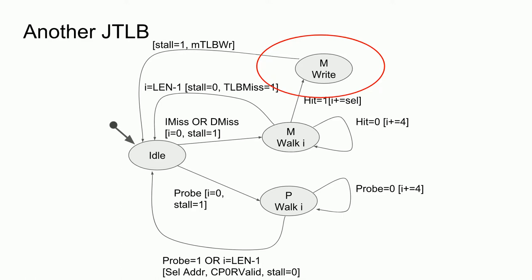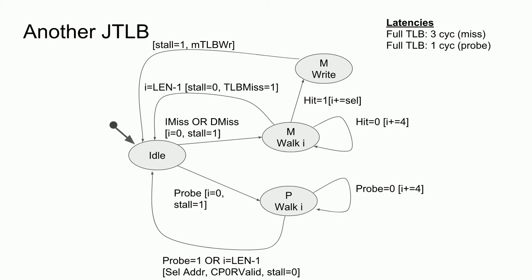Regarding operation latencies: with a full JTLB as specified by the MIPS architecture, a micro-TLB miss incurs only a three-cycle penalty — one cycle for the check, one to find the new entry, and one to write it. Probe instructions only require one cycle. For the BRAM TLB, a miss or probe results in an (n/4 + 1) or (n/4 + 2) cycle penalty respectively, where n is the number of TLB entries. A miss on a 32-entry TLB results in a 10-cycle penalty, and on a 48-entry TLB a 14-cycle penalty. Since the N64 rarely uses the TLB, the 10-cycle penalty is acceptable, but the 14-cycle penalty for the PS2 is a concern, though 14 cycles at 300 MHz is only 46 ns.